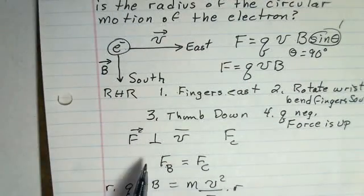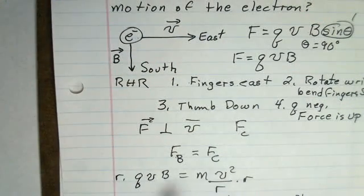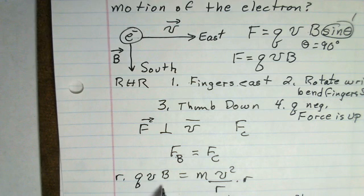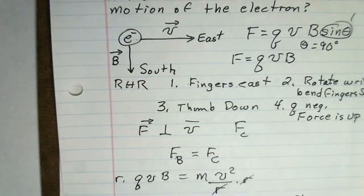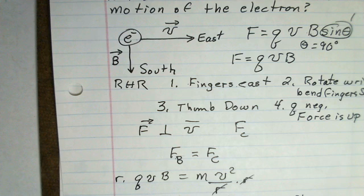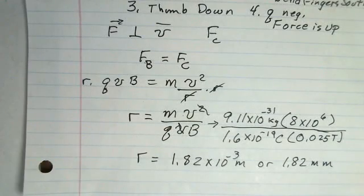This force is perpendicular to velocity. It is a centripetal force. The magnetic force is creating this centripetal force. We wrote out qvb equals mv squared over r, multiplied both sides by r, divided by qvb on both sides. One factor of v cancels. And it came up with 1.82 millimeters. You should pause the video and check this with your calculator.